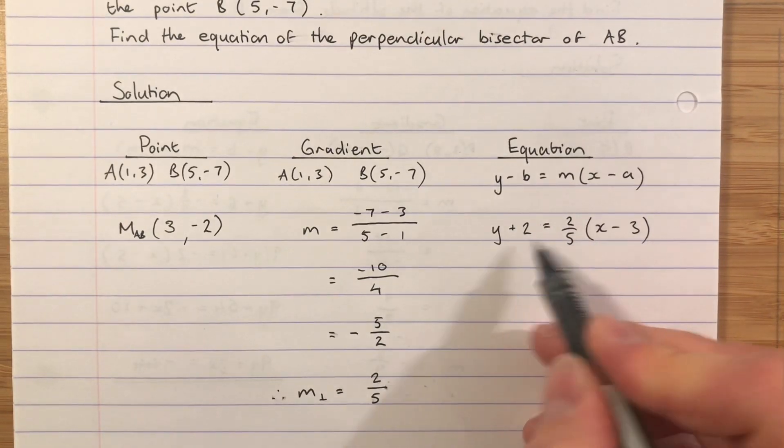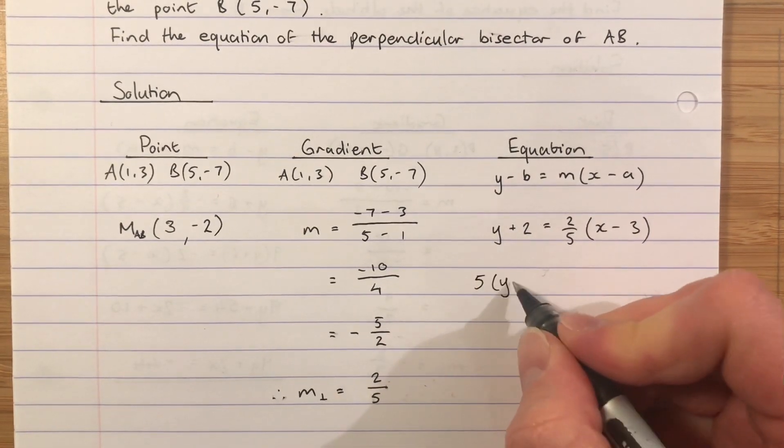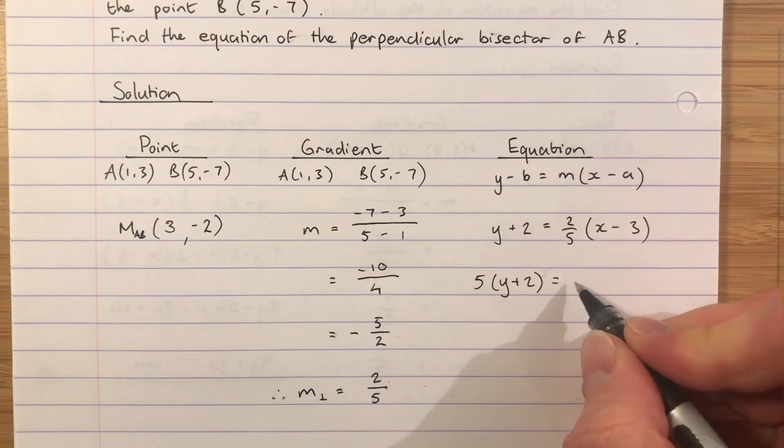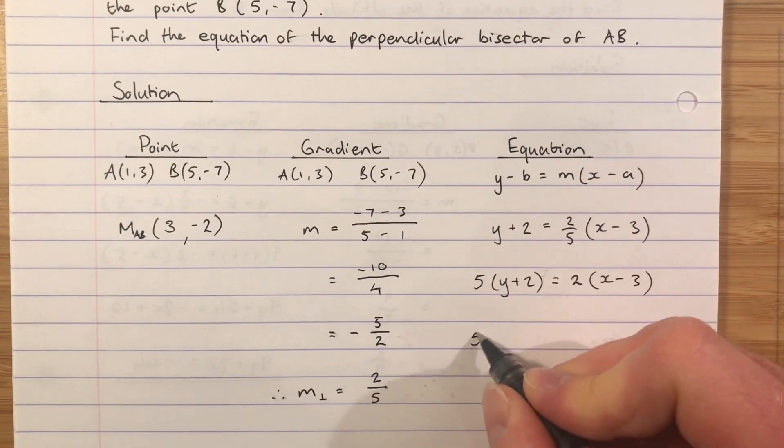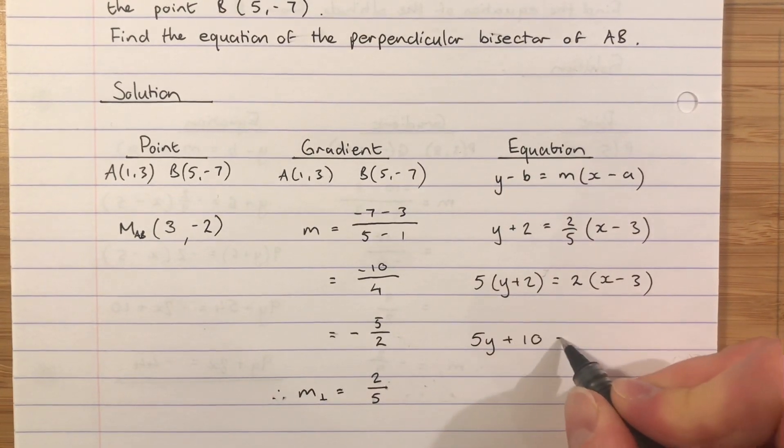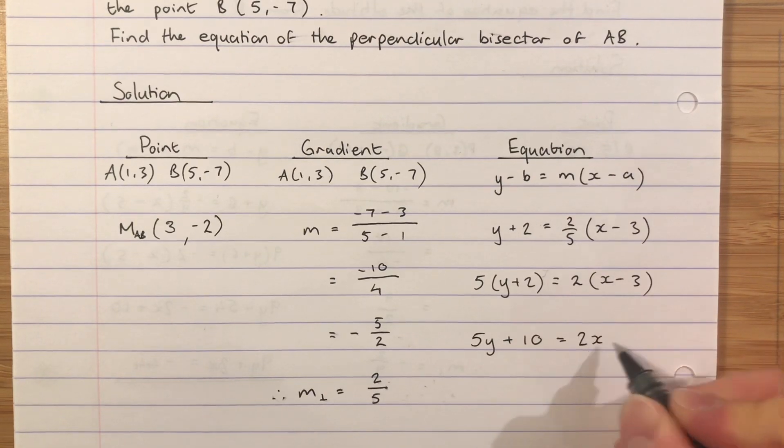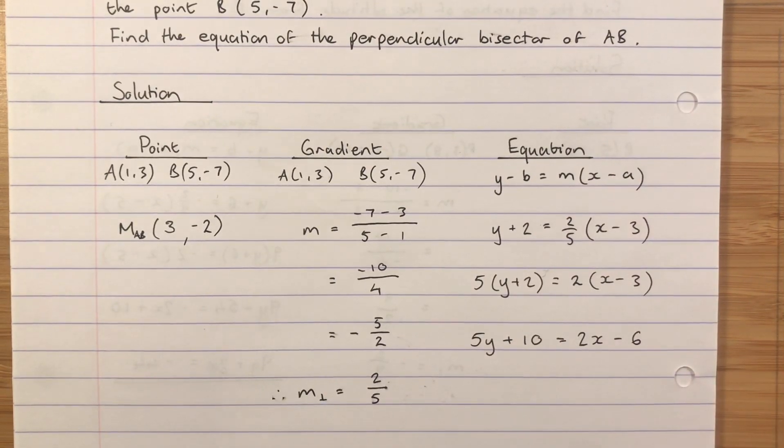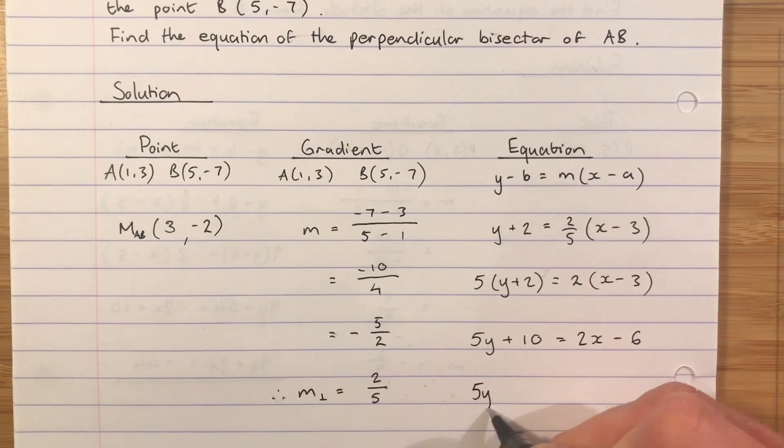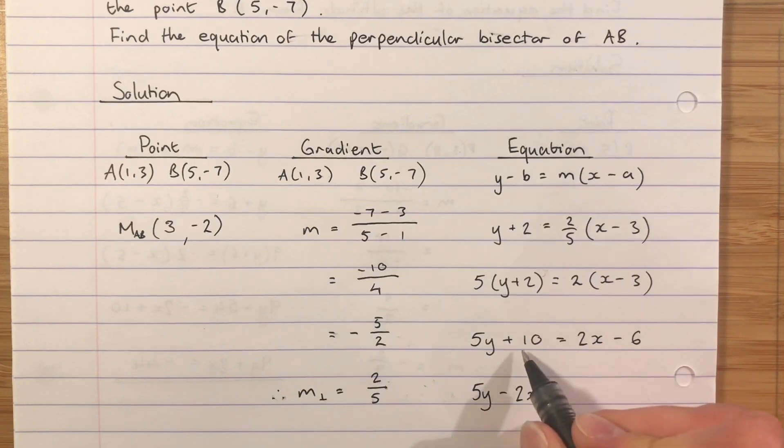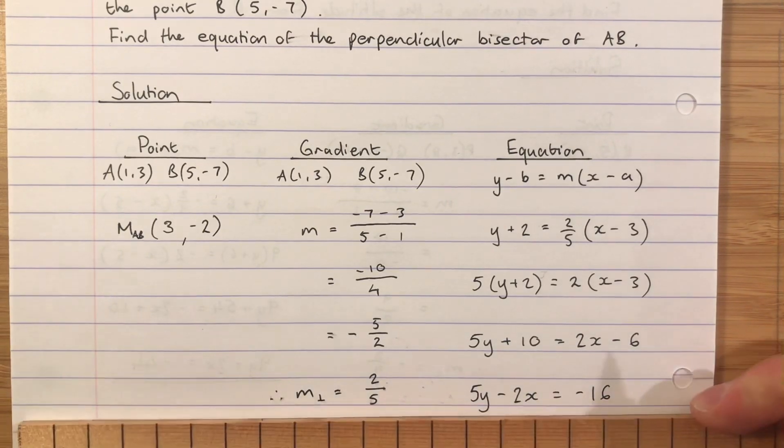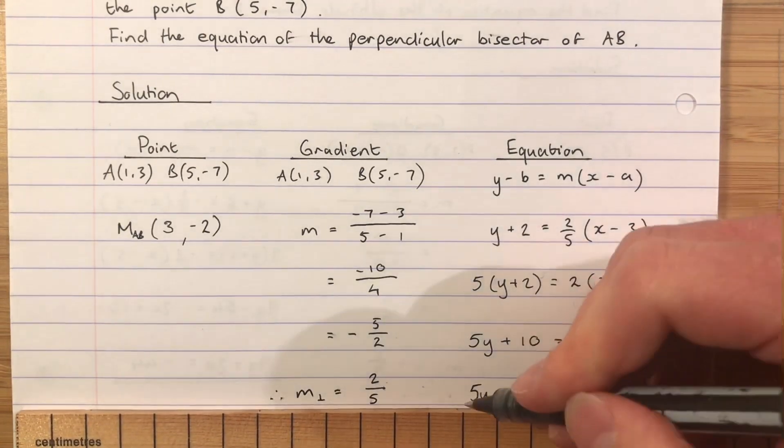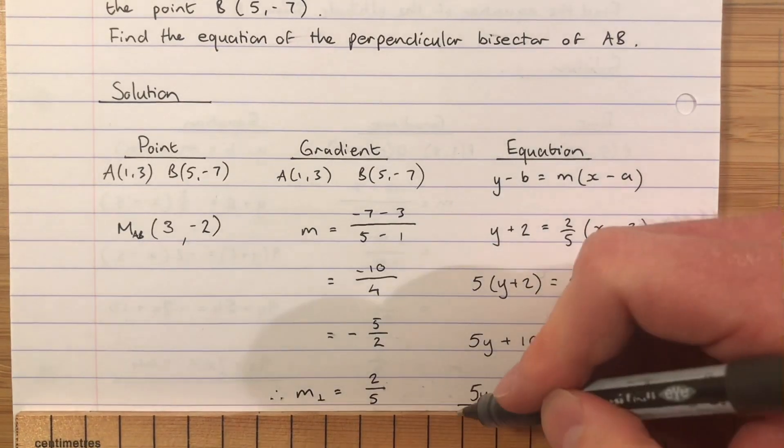Don't want to multiply through by a fraction, so I'll multiply by 5. 5 times Y add 2 leaves the 2 multiplying the X minus 3. Multiply those brackets out. I will get 5Y add 10 equals 2X subtract 6. Giving me a final answer of 5Y subtract 2X equals -16. So 5Y subtract 2X equals -16 is the equation of the perpendicular bisector.